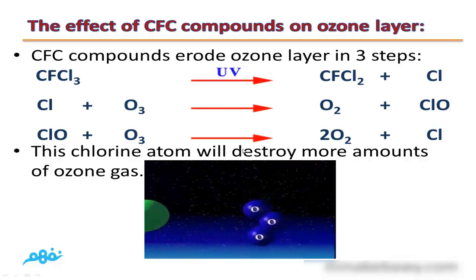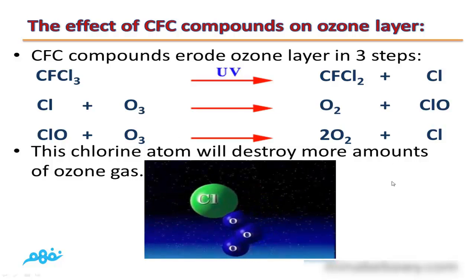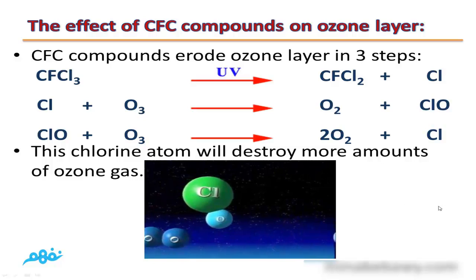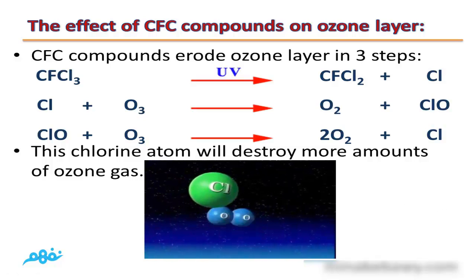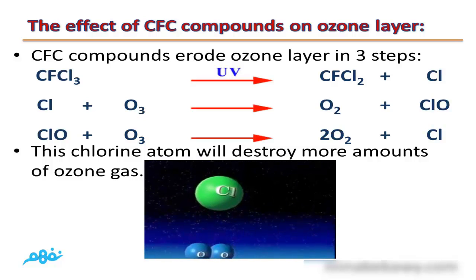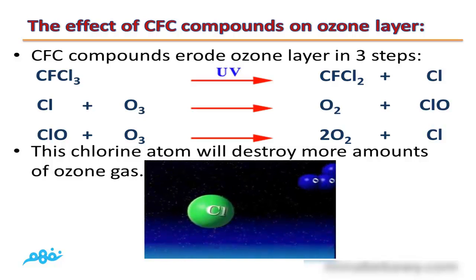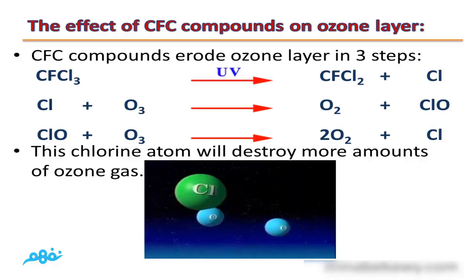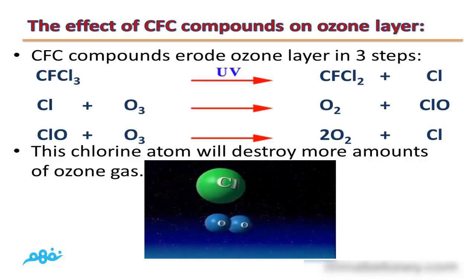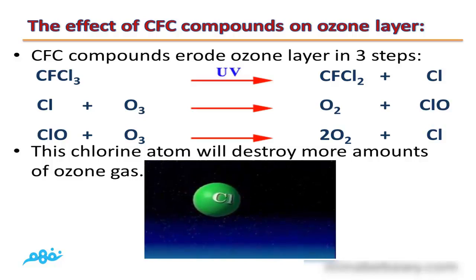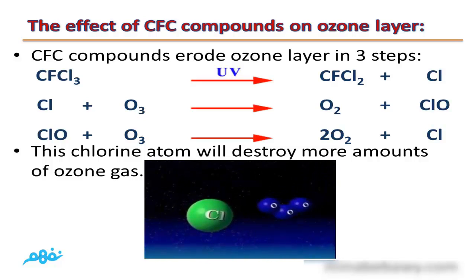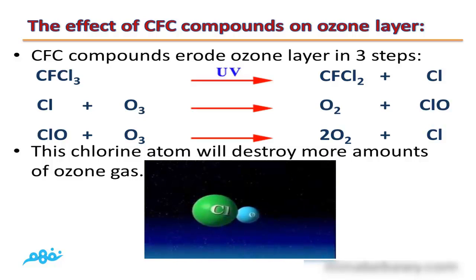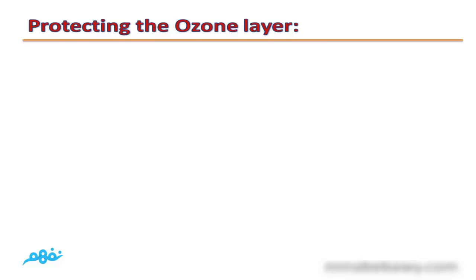This chlorine atom will destroy more amounts of ozone gas. Chlorine monoxide reacts with oxygen, producing another free chlorine atom, which will destroy more ozone molecules — and so on. This process is repeated again and again, leading to the erosion of the ozone layer.